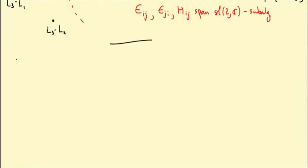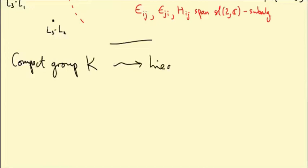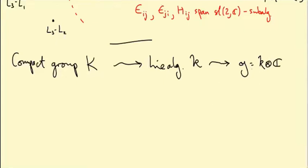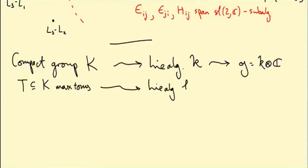Let's suppose we have a compact group K with Lie algebra little k. I'll reserve little g for the complexification of this Lie algebra, since we'll almost always be using little g. Inside the compact group K, we have a maximal torus, whose Lie algebra I'll call little t, and the complexification of that I'm calling little h.